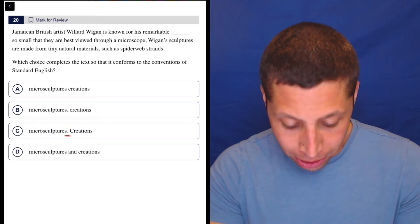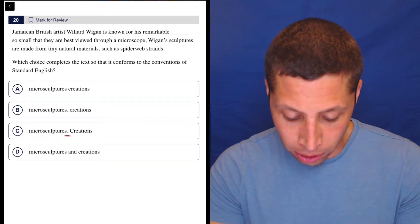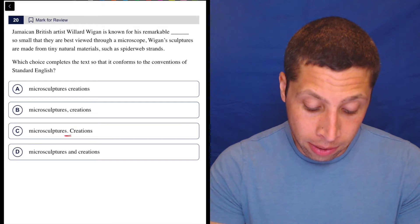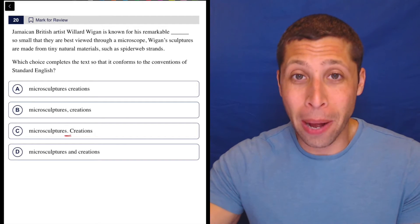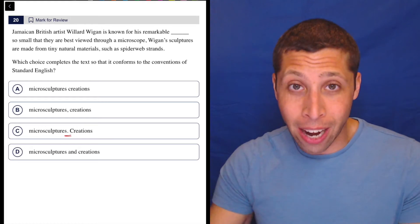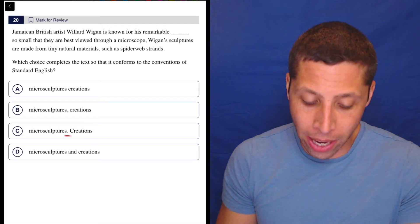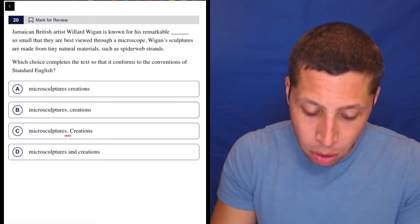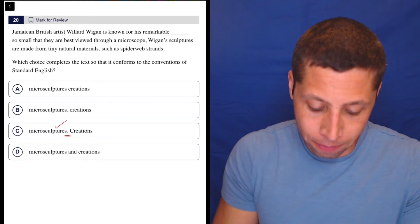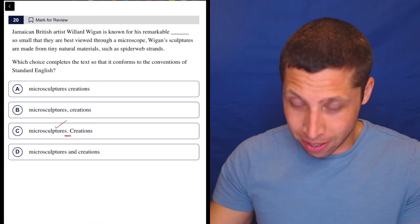Jamaican British artist Willard Wiggin is known for his remarkable micro sculptures. Now I stopped there because C opens that up, that opens that possibility up. It could end right there. Now let's just stop there because of that option and say that that could be a sentence, right? So this first part could be its own sentence. So check.